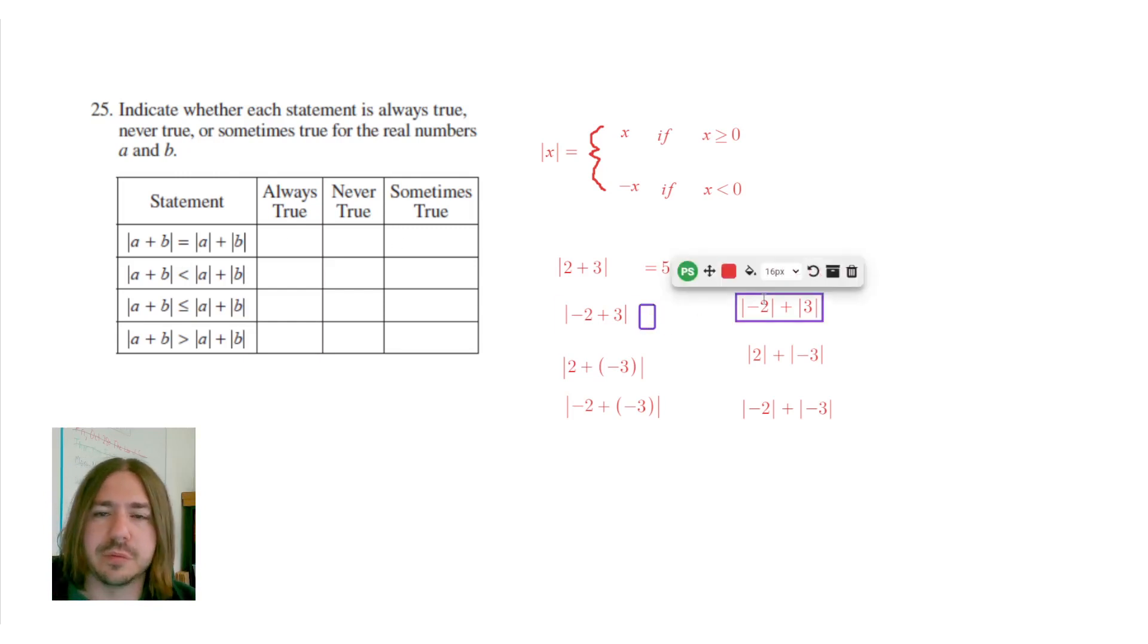So for the second one, we get negative 2 plus 3, which is 1, and the absolute value of 1 is 1. Now over here, we get the absolute value of negative 2, which is positive 2. So we get a positive 2 plus a positive 3 equals 5. So in this case, we can see that the sum of the absolute values is bigger. So we know it could sometimes be less than. So right away, we can say it's sometimes equal and sometimes less than.